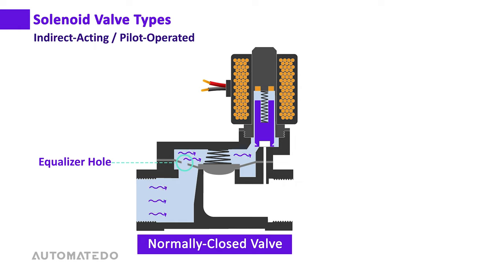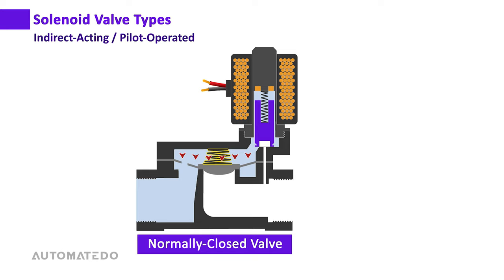Media flows from the inlet through the pinhole into the upper chamber, equalizing pressure in both chambers. However, the pressurized media in the upper chamber acts across a much broader area of the diaphragm than the media at the inlet. Therefore, the downward force above the diaphragm is greater than the upward force below it, keeping the valve closed.